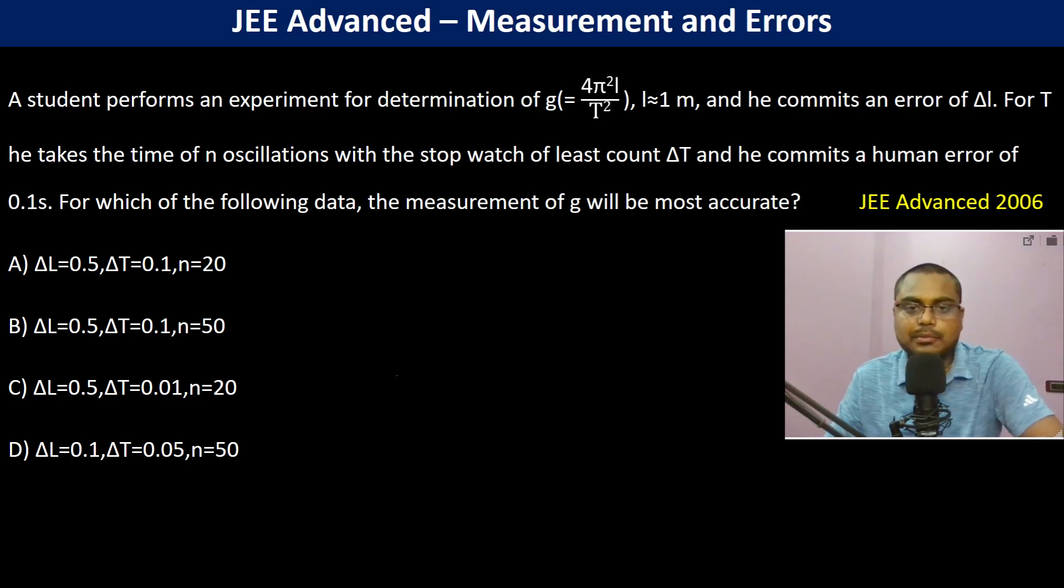A student performs an experiment for determination of g, and L is 1 meter, and he commits an error of delta L. For T, he takes the time of n oscillations with a stopwatch of least count delta T and he commits a human error of 0.1s. For which of the following data is the measurement of g most accurate?